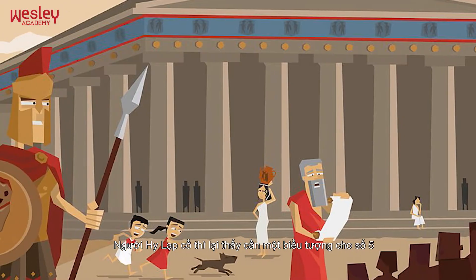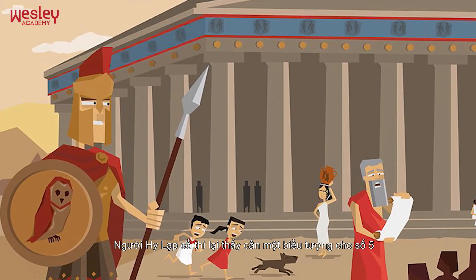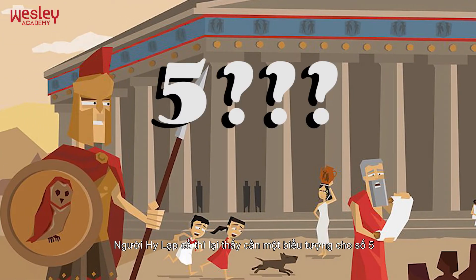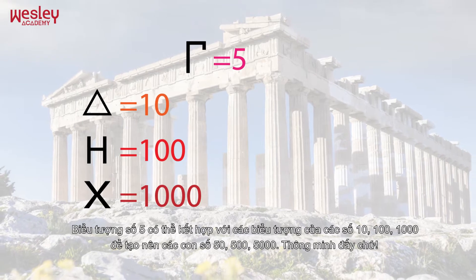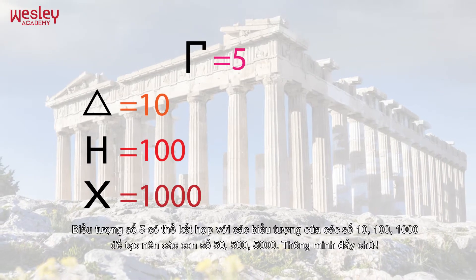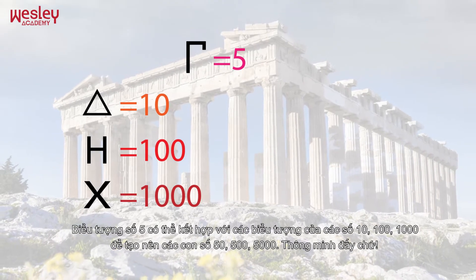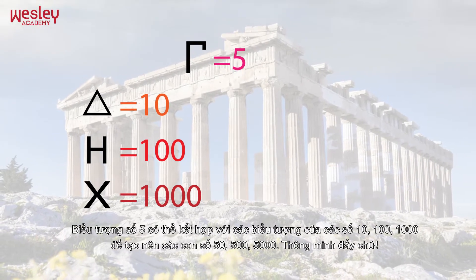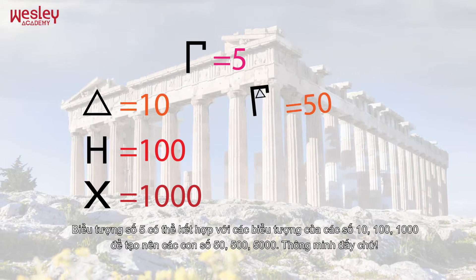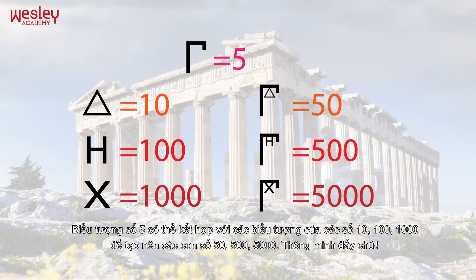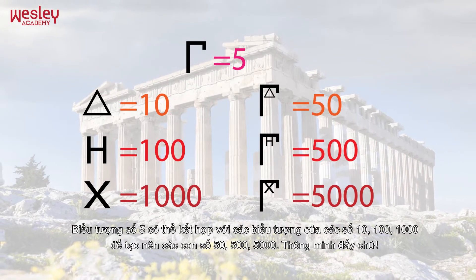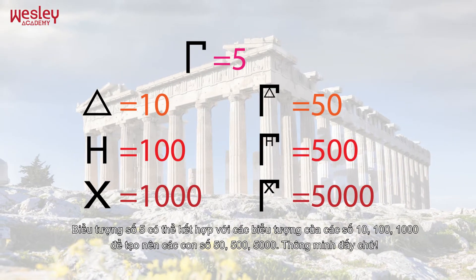The ancient Greeks saw the need to include a symbol for five. This symbol can be combined with the symbols for 10, 100, and 1000 to make 50, 500, and 5000. Isn't that smart?